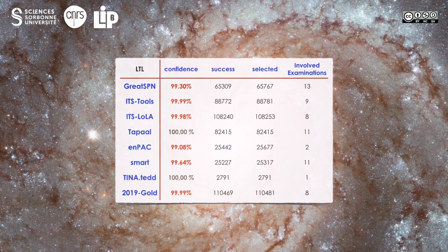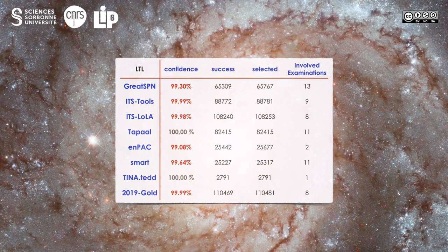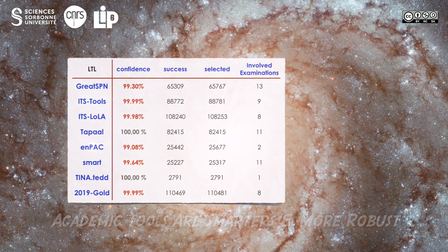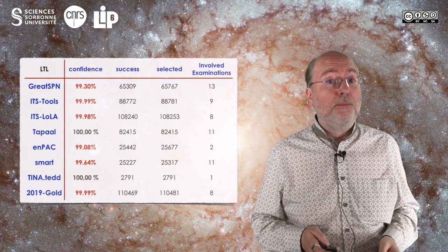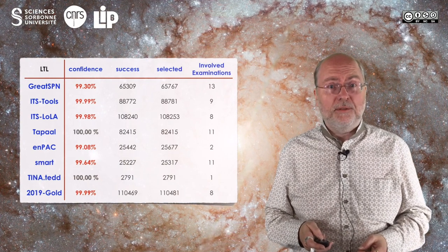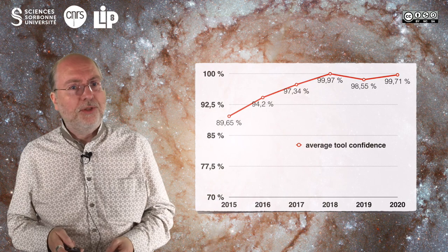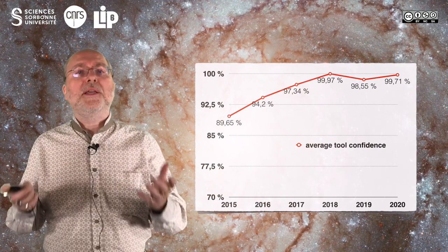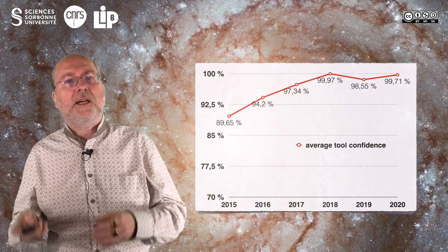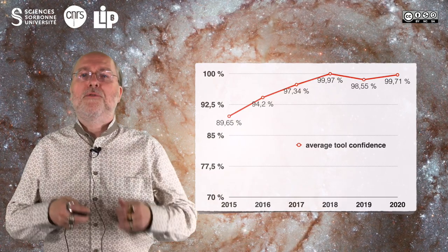Let us have a look at the global confidence rate of this year's participants. In this table, all examinations are considered and the values are quite close to 100% for all tools. For us, this is a good proof to industry — academics now have a way to show their tools are becoming smarter and smarter. Faults often come from a bug in the processing of formulas or in the translation of the XML format, more rarely in the engine itself. The average confidence rate since this metric was introduced in 2015 globally increases, and the model checking contest has had a positive effect on the software production of our community.